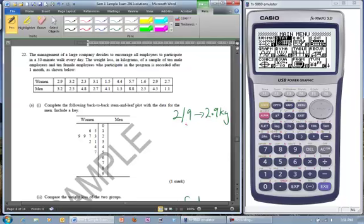You can either go 2 slash 9 which means 2.9 kilograms or write kilograms in there. Let's fill them in: 3.2 kilos is that, 2.5 is there, 4.8 is there, 2.7, 4.1.